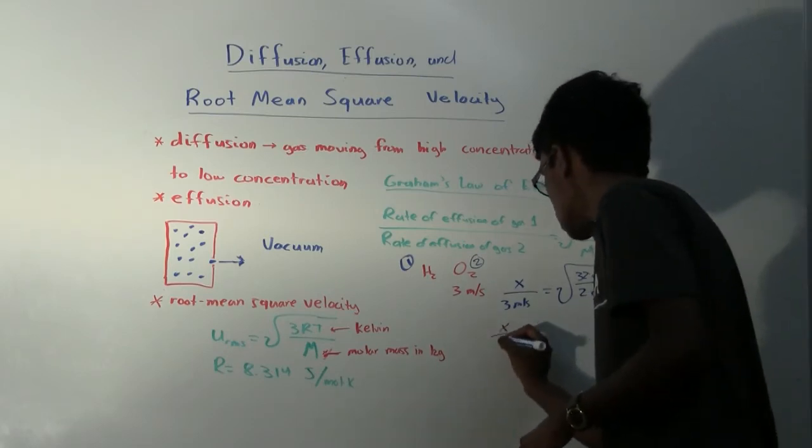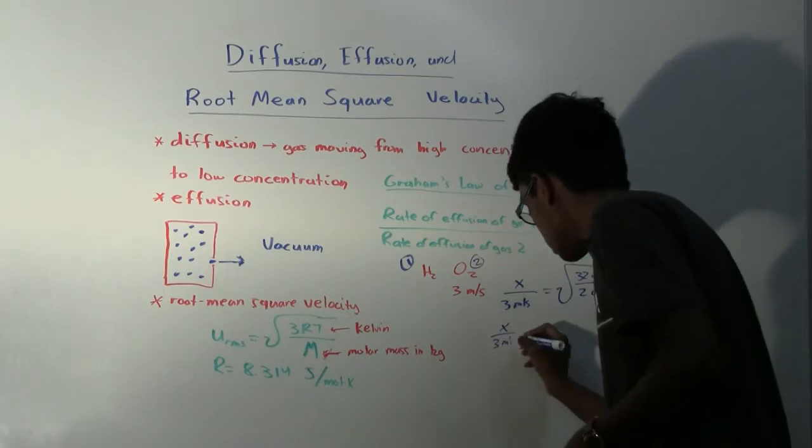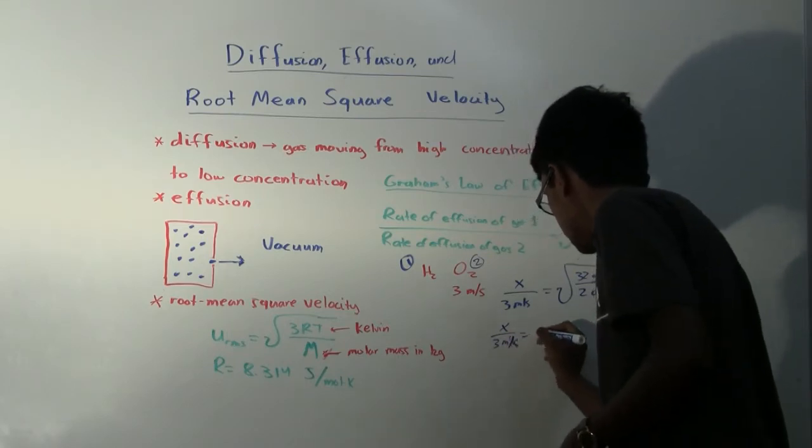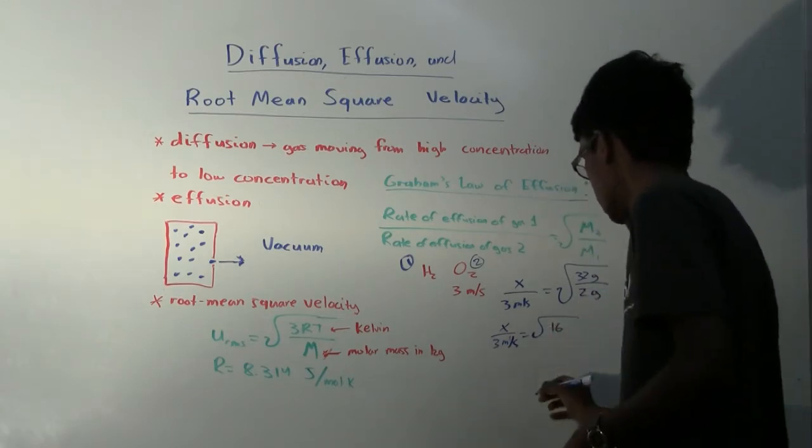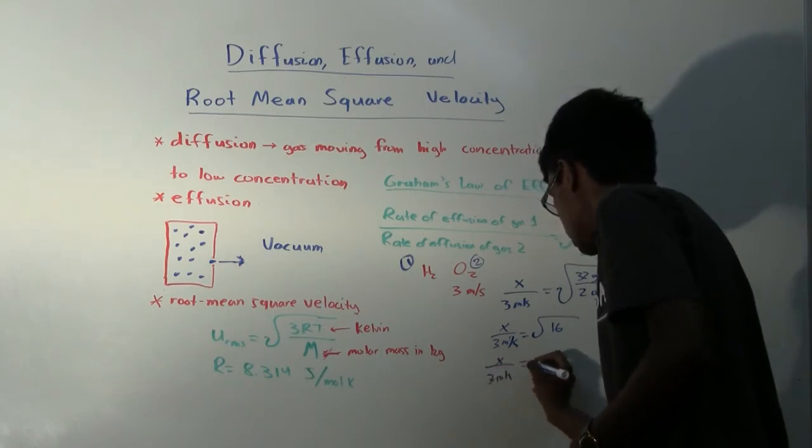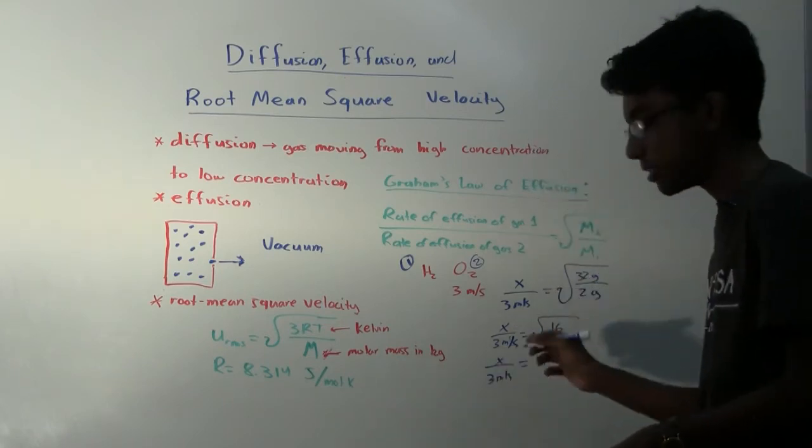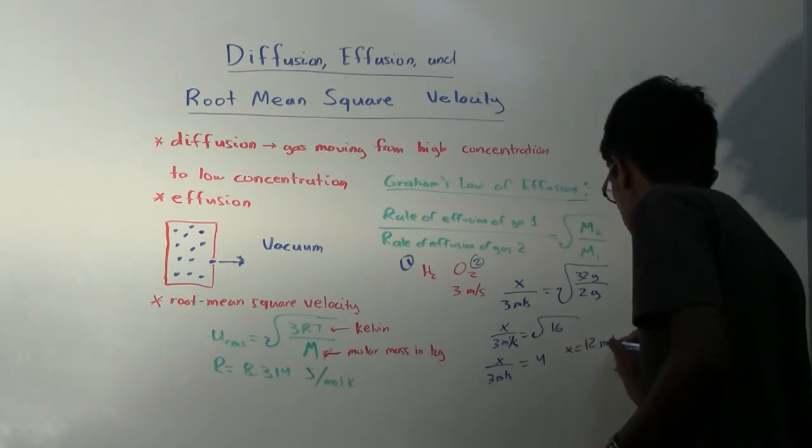So this is x over 3 meters per second equals the square root of 32 divided by 2, which is 16. x over 3 meters per second. The square root of 16 is 4. And then we can multiply this out. And x equals 12 meters per second.